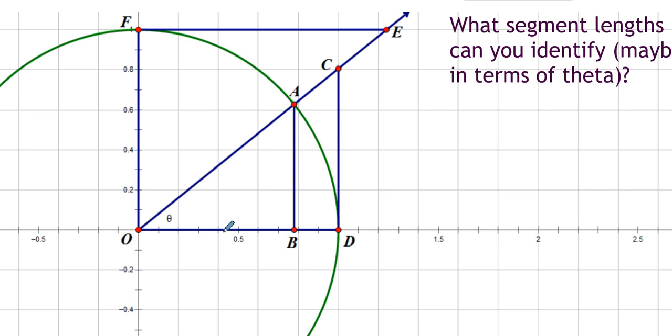This is a unit circle, circle of radius one. There's this acute angle theta right here. And you can assume that those are right angles and that's a right angle and that's a right angle. You can assume all of that.